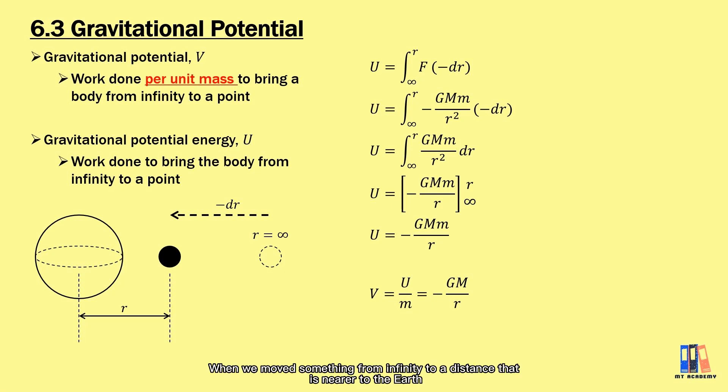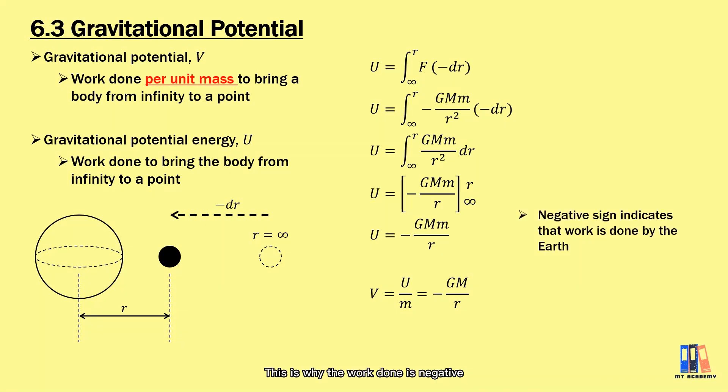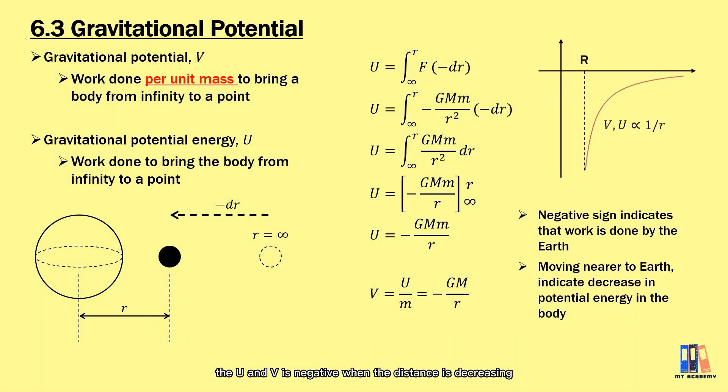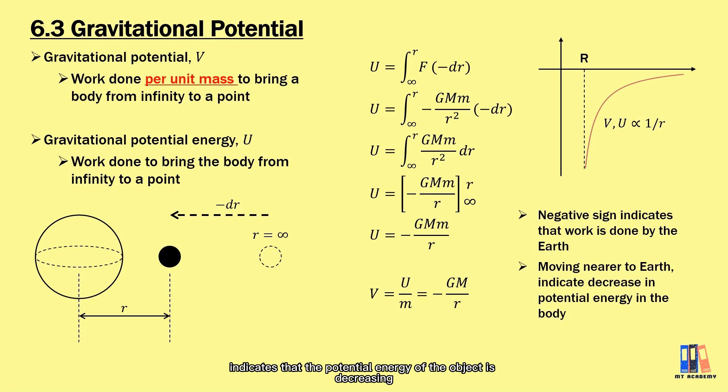Now, let's come back to the universe. When you move something from infinity to a distance nearer to the Earth, the potential energy of the object is actually decreasing. So this is why the work done is negative—the work is done by the Earth. Also, U and V being negative when distance is decreasing indicates that the potential energy of the object is decreasing.